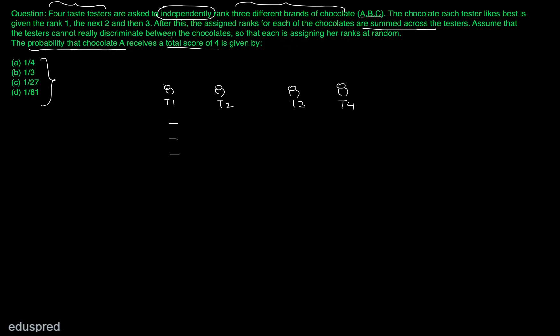It is also given that the testers are assigning the ranks at random. That means the probability of a chocolate taking rank 1 from any tester is 1 divided by 3, because no tester has any preference — they are just assigning ranks randomly. So tester 1 can give any chocolate rank 1, and similarly tester 2 can give any chocolate rank 2. There is no pattern; they are just assigning ranks randomly.